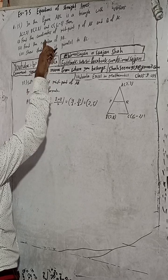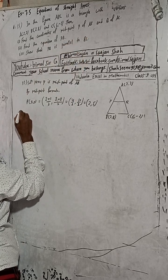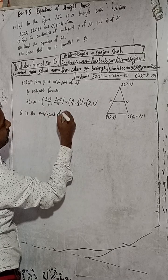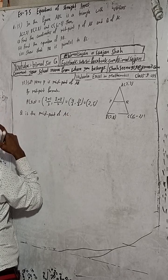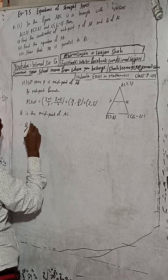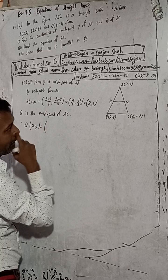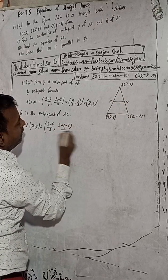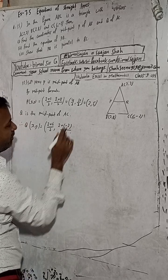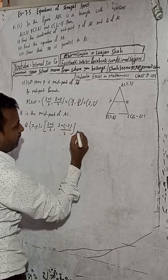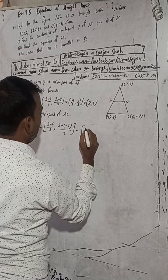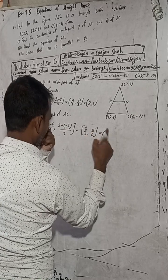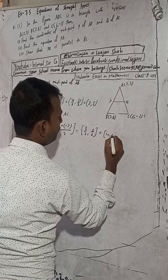Now we have the midpoint P. Next, Q is the midpoint of AC. Therefore Q(x, y) = ((2+6)/2, (2+(-2))/2). Solving: 2+6 = 8, so 8/2 = 4; and 2-2 = 0, so 0/2 = 0. Therefore Q = (4, 0).